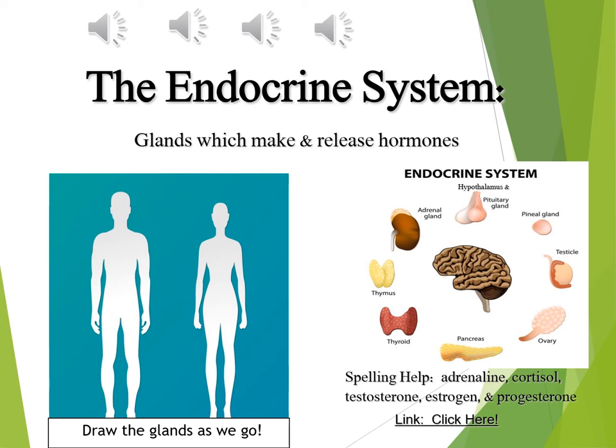If a woman is on a birth control product, it's often a combination of estrogen and progesterone. Why? If her levels of estrogen and progesterone are made artificially high, it psychs the body into thinking it's pregnant. If her body thinks it's pregnant, she will not release an egg. So it prevents egg release by simulating pregnancy — and many side effects of hormonal birth control products mimic pregnancy.